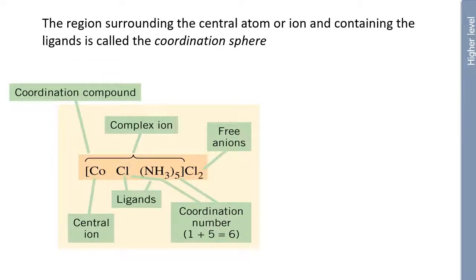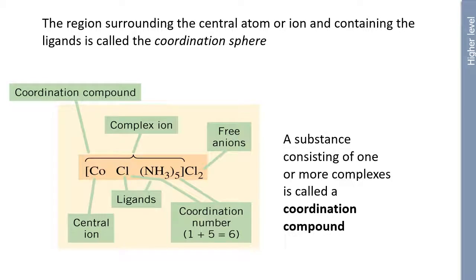So why do certain ions favor certain shapes or coordinations? Well, the region surrounding the central atom or ion that contain the ligands is called the coordination sphere. And this is how we write these coordination compounds. So we start off with the metal, the central ion. We then put square brackets around the entire ligands, and you've also got the 2 free ions floating around. So this actually represents cobalt chloride NH3, sorry, not NH3, NH3 in the middle, NH3 5 square bracket 2 plus, from the cobalt 2 plus ion. And it's also got 2 Cl minuses as anions to go with the complex. So that's what actually that represents. A substance consisting of one or more complexes is called a coordination compound, and that's just an example there.